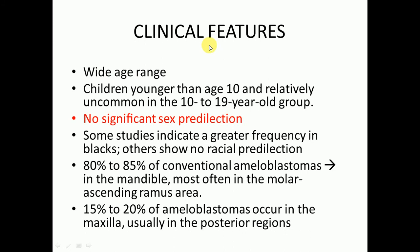Regarding clinical features of conventional ameloblastoma, it has a wide age range and is most commonly present in children younger than age 10, being relatively uncommon in the 10 to 19-year-old group. There is no sex predilection. Some studies indicate greater frequency in Blacks, though no definitive racial predilection is established. 80 to 85% of conventional ameloblastomas are present in the mandible, most often in the molar-ascending ramus area, whereas 15 to 20% occur in the maxilla, usually in the posterior region.